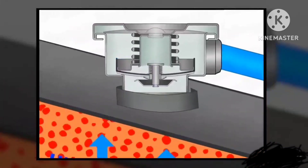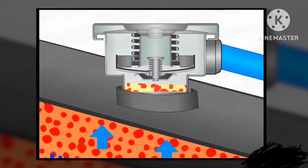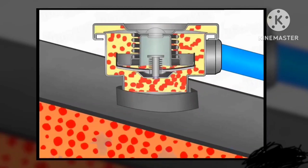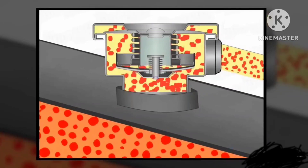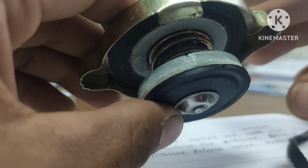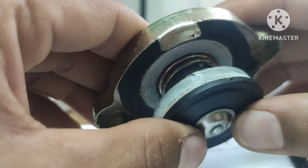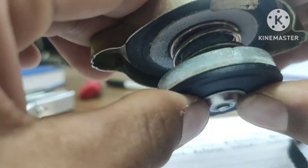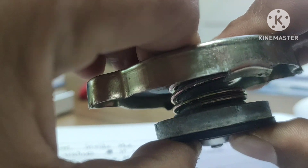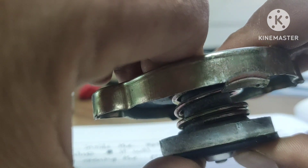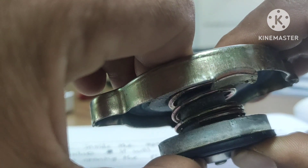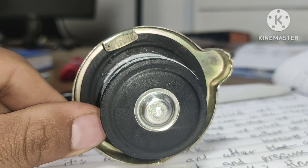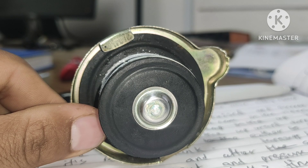If the pressure inside the system raises and exceeds a certain predetermined value, it will release the pressure from the system by opening the pressure release valve, as shown in the video. When pressure exceeds the predetermined value, it starts to push the bottom seal of the pressure cap in the upward direction and releases the pressure either to the atmosphere or to the recovery tank.